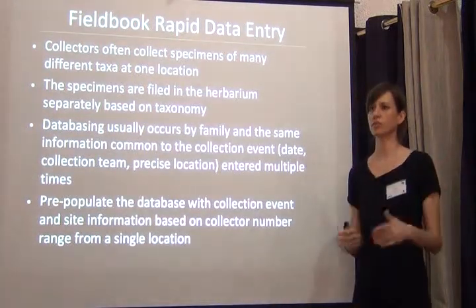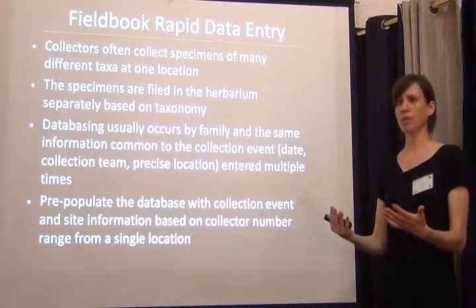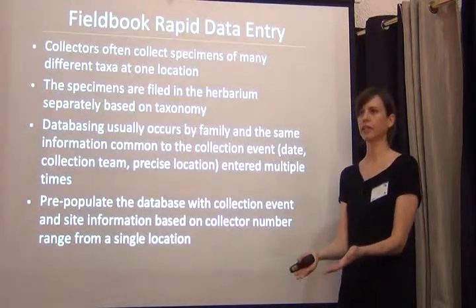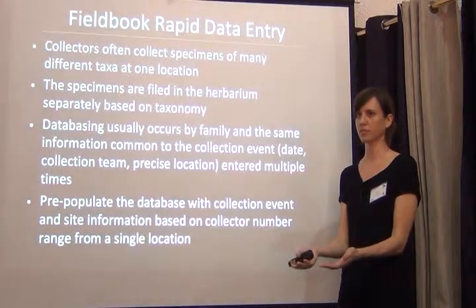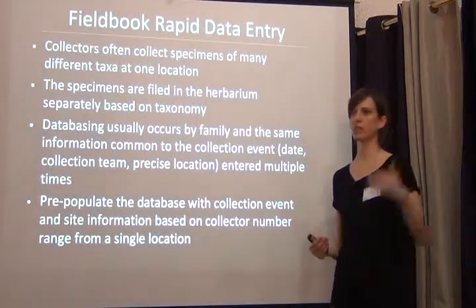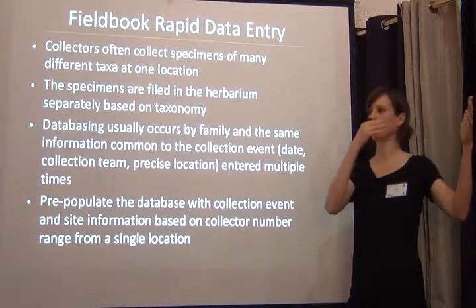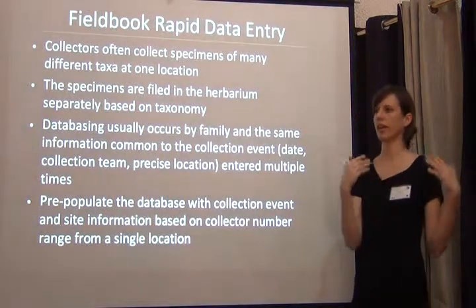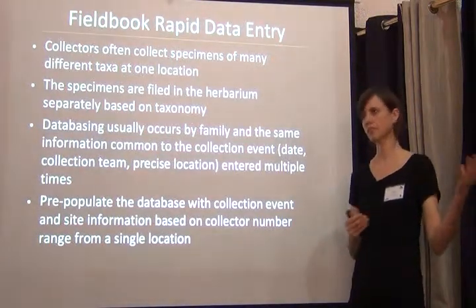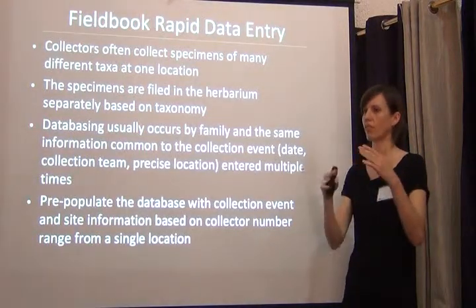We went through all the field books for the major collectors, page by page. A collector may go to one location and collect 20 different things from 20 different taxa, and when those specimens come back they're going to be at 20 different locations in the herbarium. Your digitization staff won't know that that exact same locality information is already in the database under a completely different taxonomic name, because if you're going specimen by specimen, you're not looking for things around it.